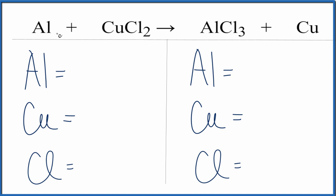Count the atoms up. We have 1 aluminum, 1 copper, 2 chlorines on the left. We have 1 aluminum here, 1 copper, and 3 chlorines on the right.